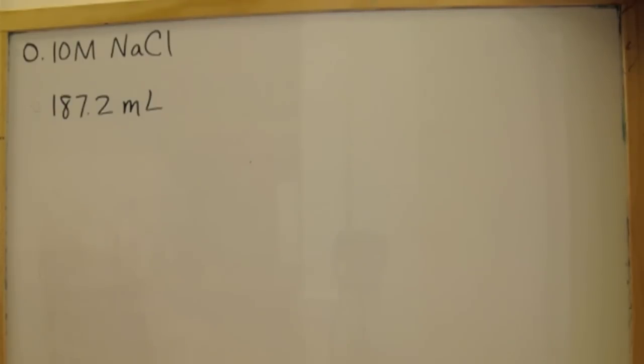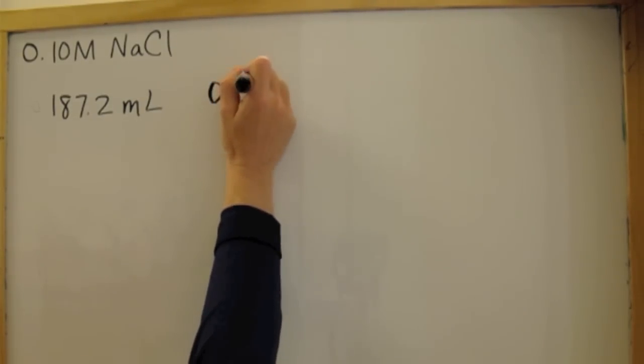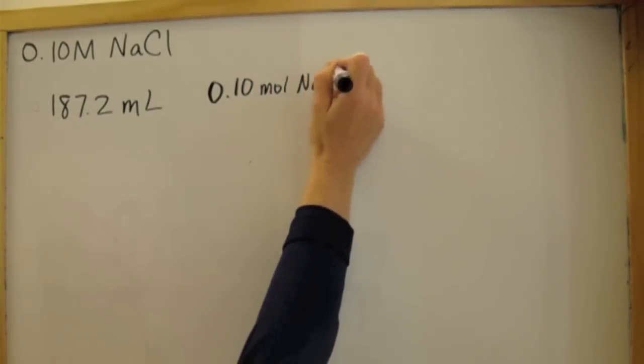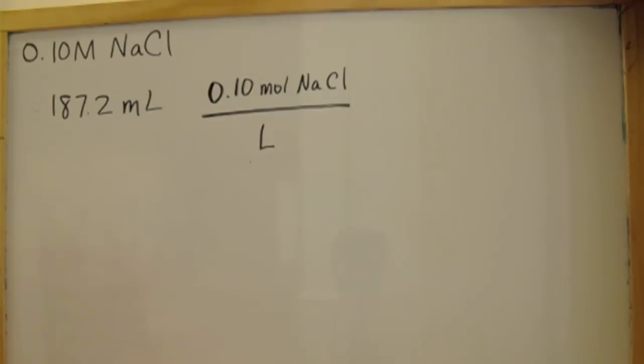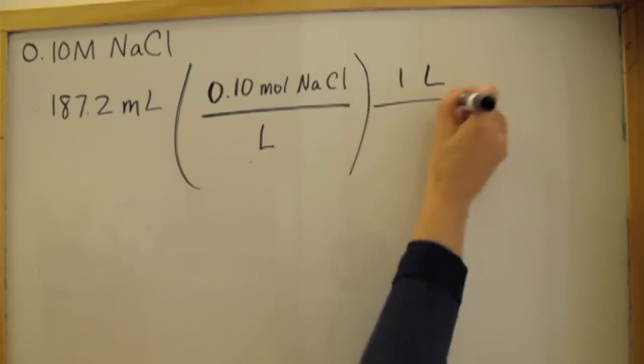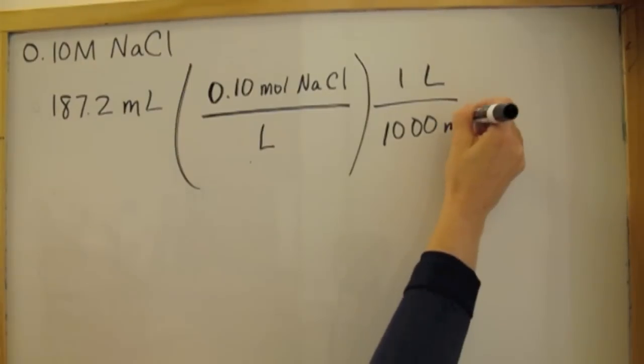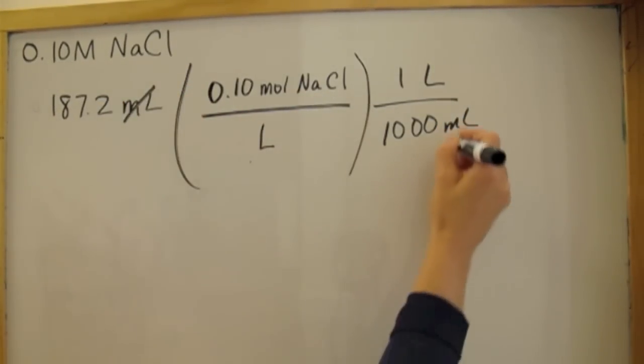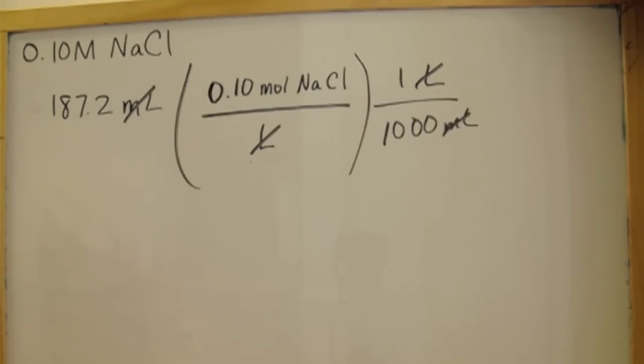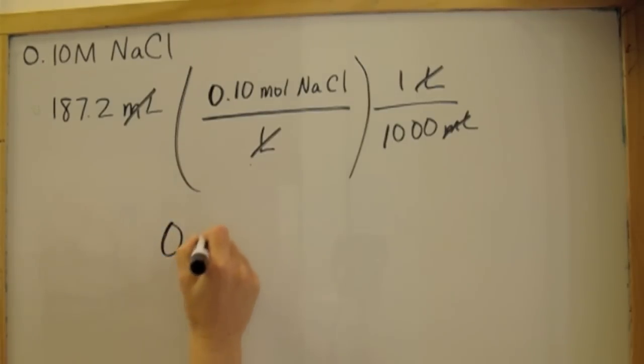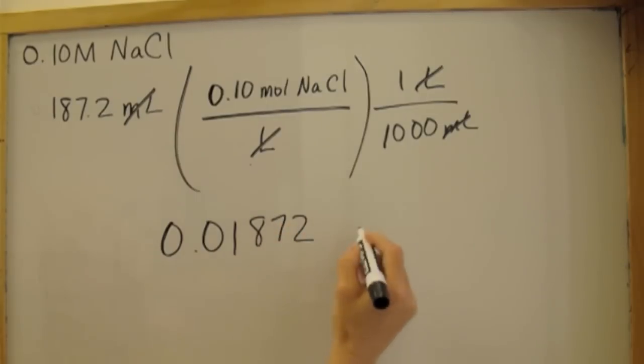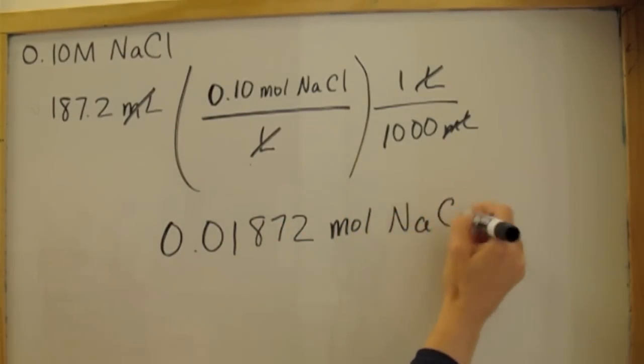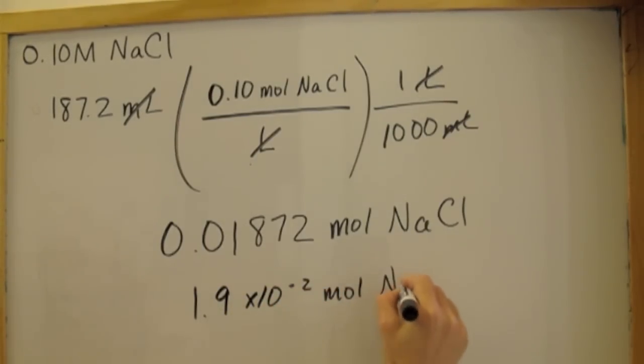Well, I can also say that I have 0.10 moles of sodium chloride per liter of solution. From there, I know that in one liter, I have 1,000 milliliters. Canceling my units, I'm left with 0.01872 moles of NaCl. Or, using sig figs and scientific notation, 1.9 times 10 to the negative 2 moles of sodium chloride.